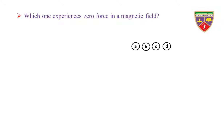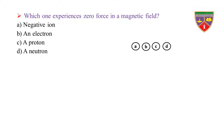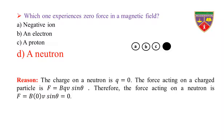Which one experiences zero force in a magnetic field? Option A: negative ion. Option B: an electron. Option C: a proton. Option D: a neutron. The key is neutron. Therefore, the correct option is D.